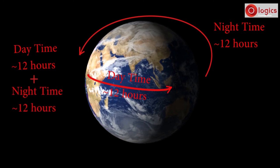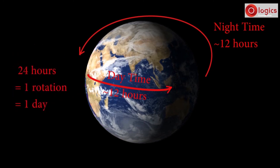Overall, Earth takes 24 hours for one complete rotation on its axis, which is one day.